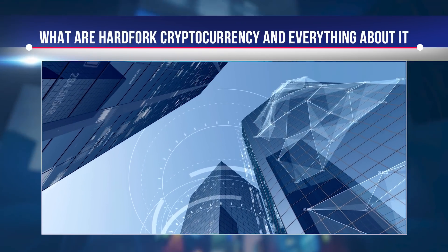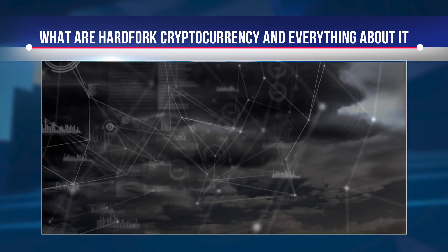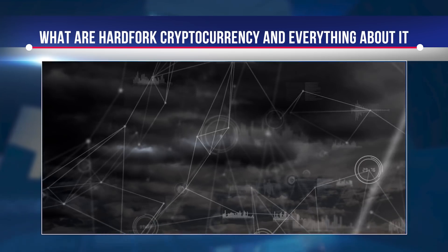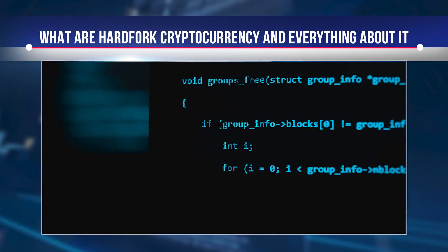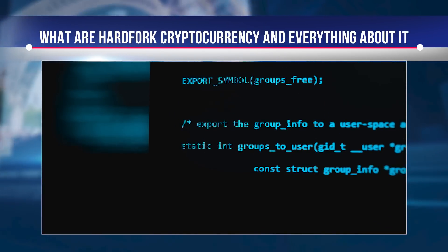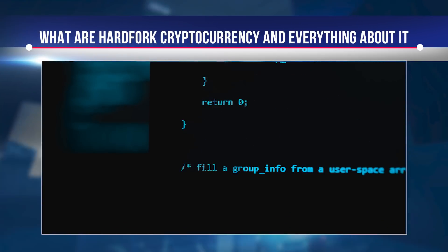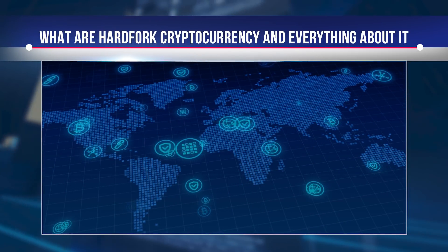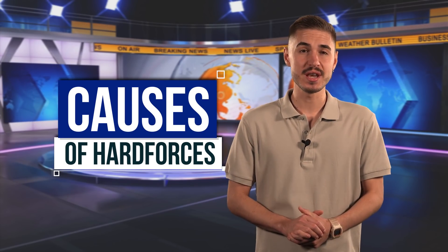If a more global change is required, a hard fork is used. This procedure affects the very principles of how the system works. The situation escalates to the point where the old software version becomes practically useless and incompatible with the new changes. The hard fork leads to a split into two different branches. Users are left with two choices: stay in the old network or migrate to the new one and accept the new rules.